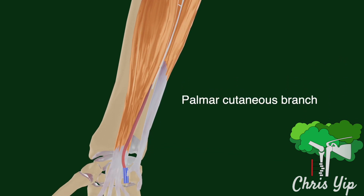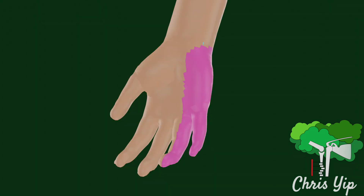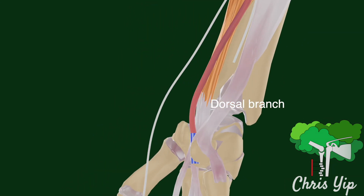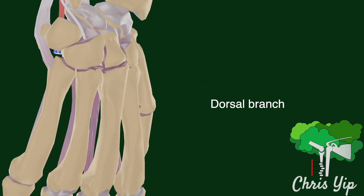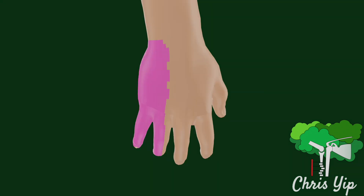The palmar cutaneous branch branches off from the main nerve proximal to the wrist, where it penetrates the muscle and the deep fascia to provide sensory innervation to the palm — specifically, the ulnar side of the palm. Then, as the main ulnar nerve arrives at the wrist joint, a dorsal branch branches off, penetrating deep to the flexor carpi ulnaris and the deep fascia to the dorsal side of the hand, where it provides sensory innervation to the ulnar side of the dorsum, as well as the skin overlying the fifth digit and the medial half of the fourth digit.